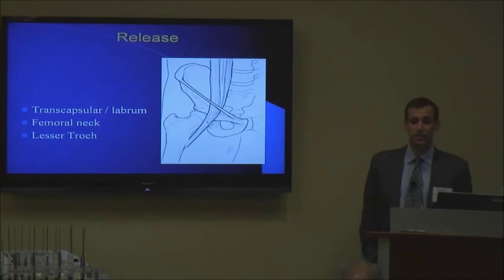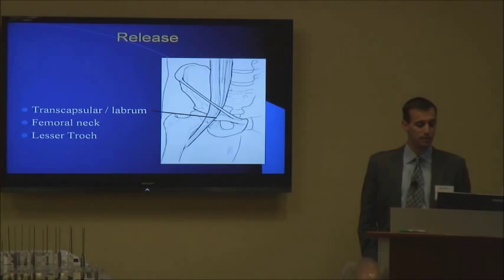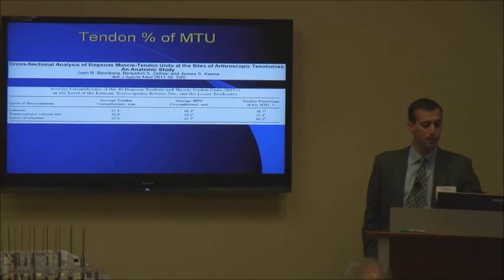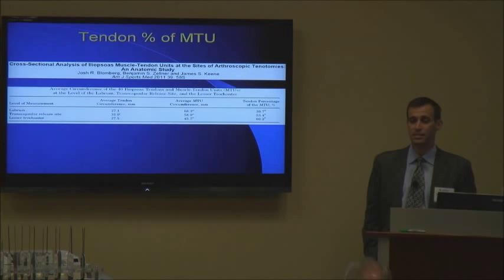A lot of iliopsoas tightness can be treated non-operatively with stretching and proper techniques, but occasionally you'll get a patient who needs a release. There are generally three levels of release described: the transcapsular or labral release, frequently done in younger patients and an easy adjunct to add during hip arthroscopy when indicated; release at the level of the femoral neck; and release at the lesser trochanter. A study published by Bloomberg in AGSM in 2011 discussed the cross-sectional analysis of the iliopsoas muscle-tendon unit at different sites of arthroscopic release.